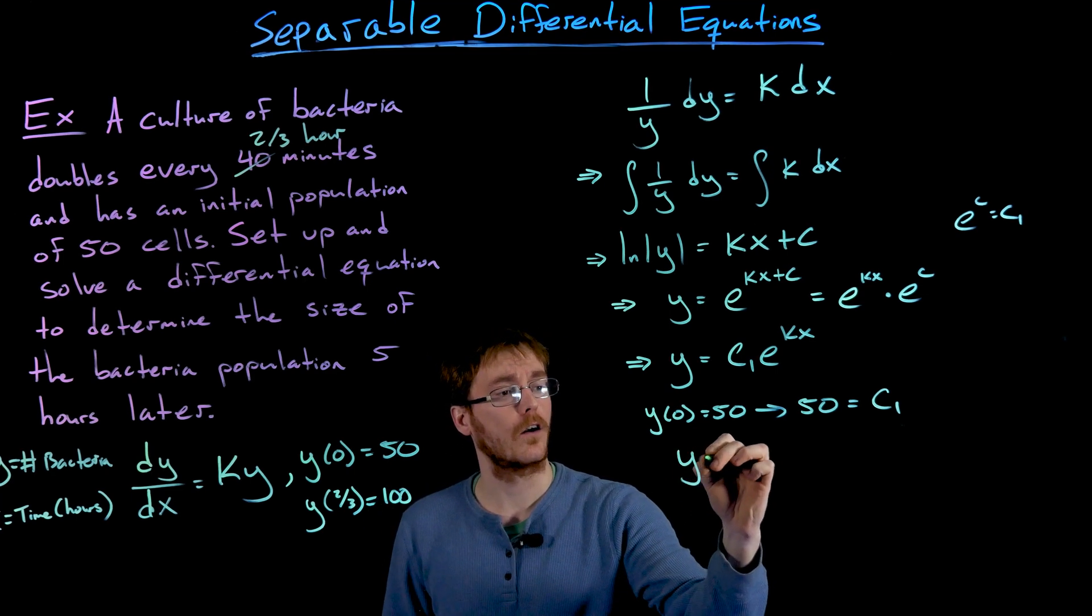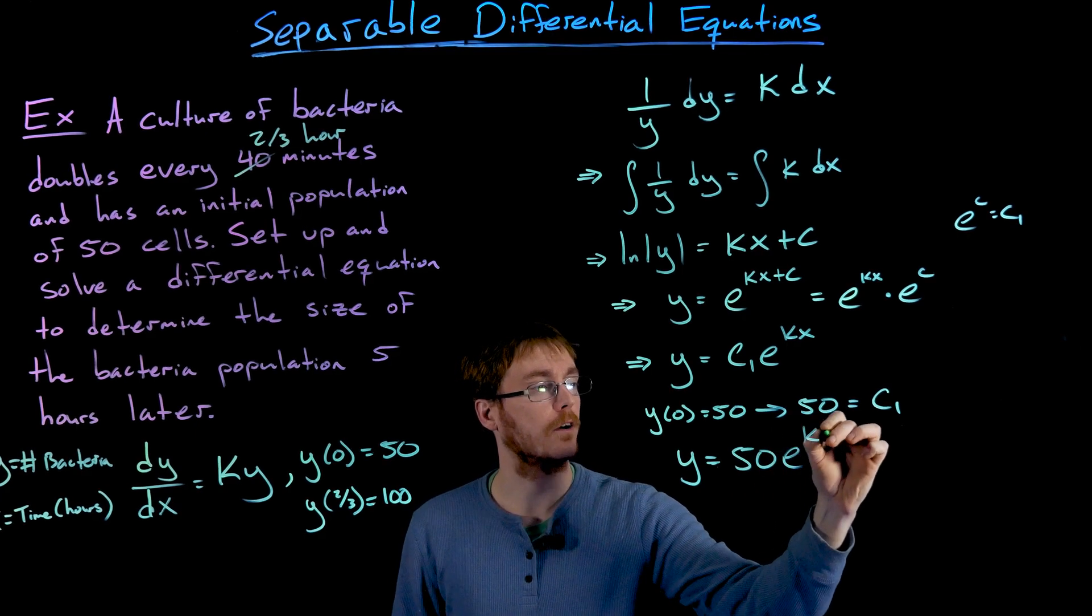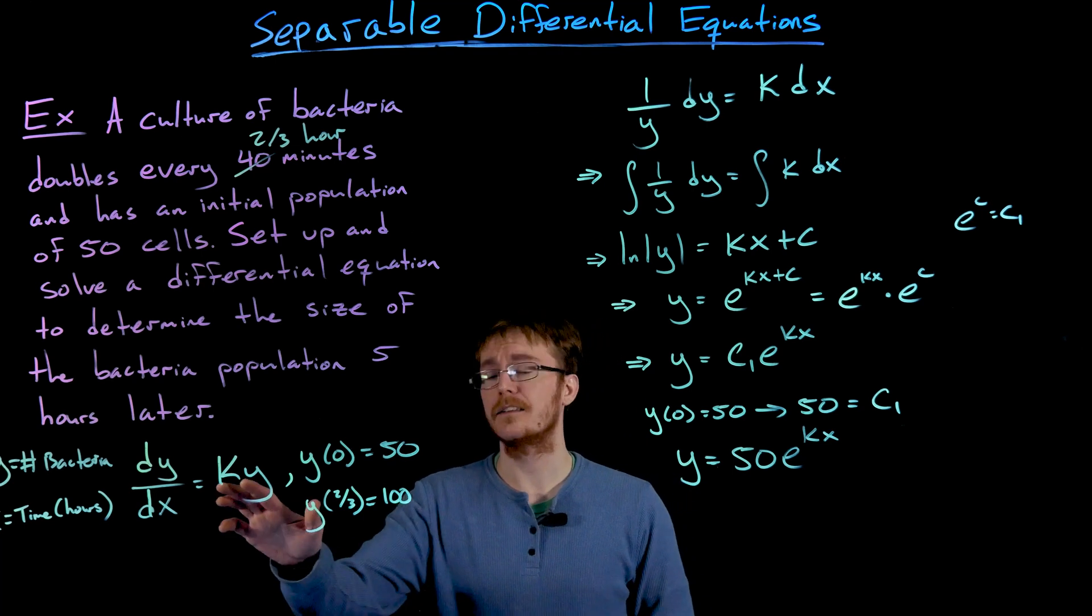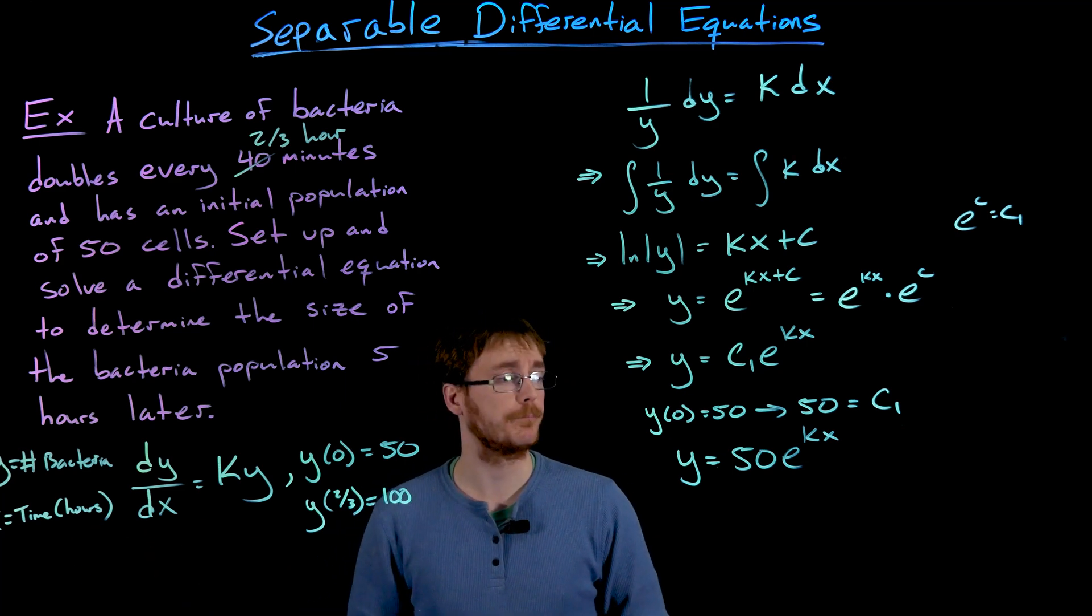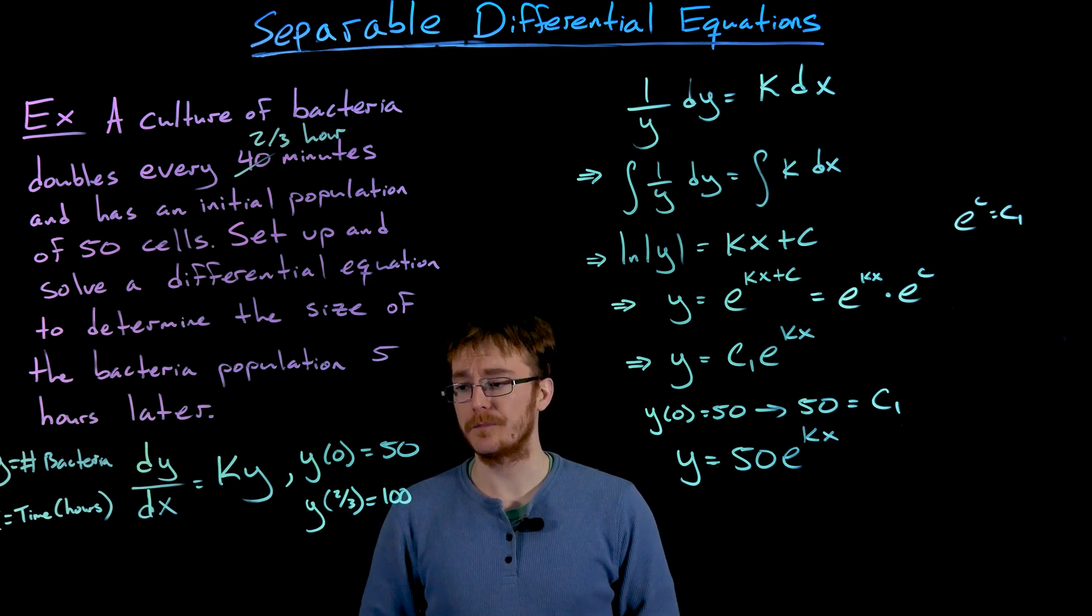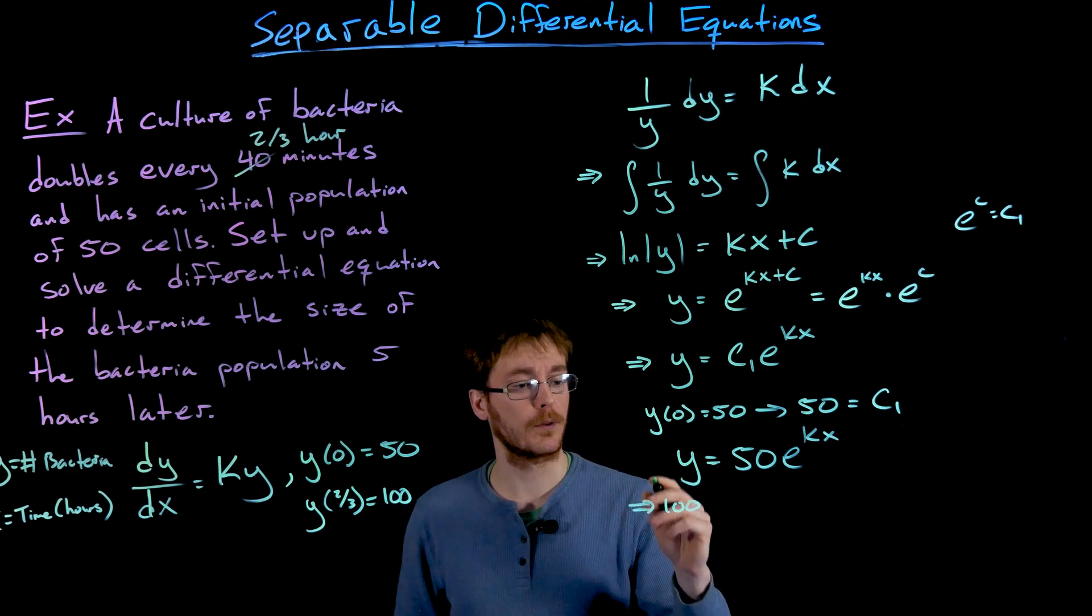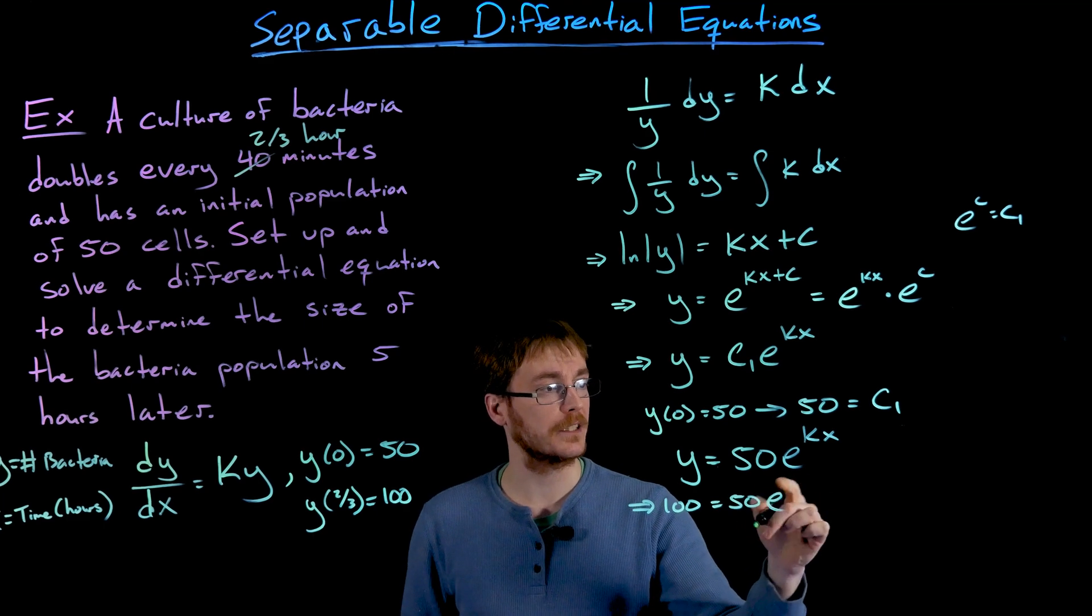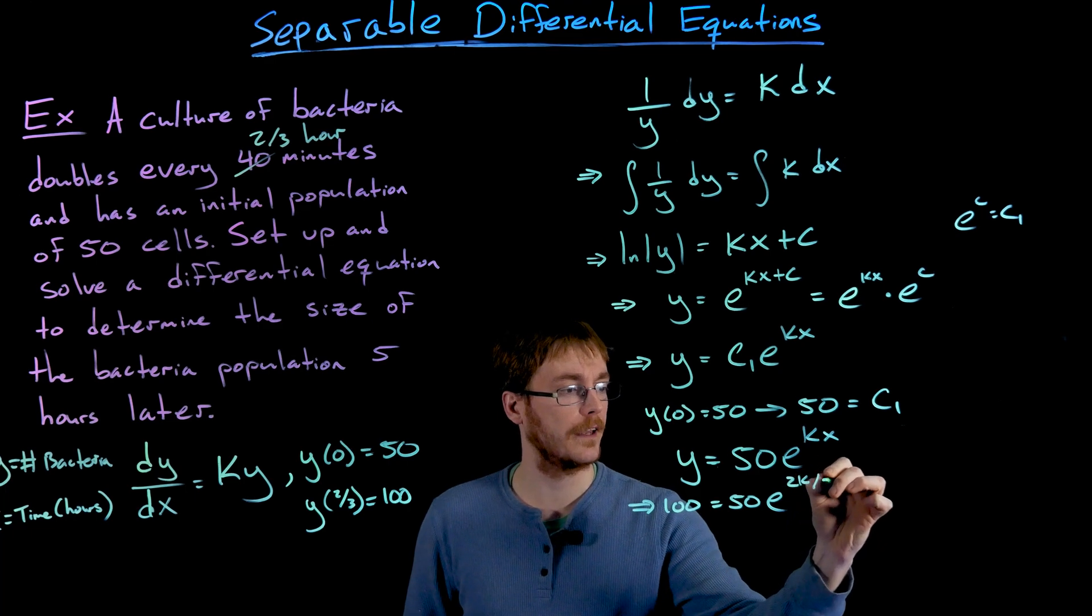But we need to figure out what that value of the constant k is. That's going to be related to the growth rate of our population with respect to our units of hours now. How do we find that k value? We use our other piece of our initial condition. We know that y of 2 thirds is going to be equal to 100. So we can plug that into our equation. y is equal to 100. That's equal to 50 times e to the k times x. But x is 2 thirds. So that'll be 2k over 3.